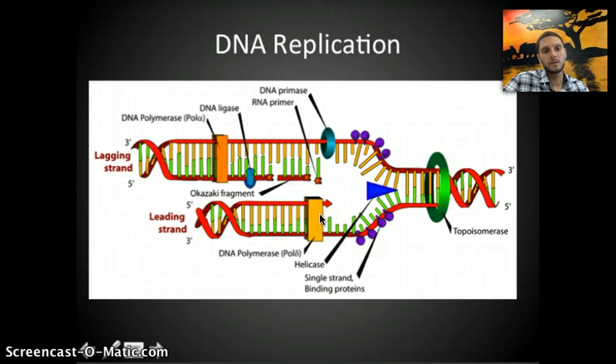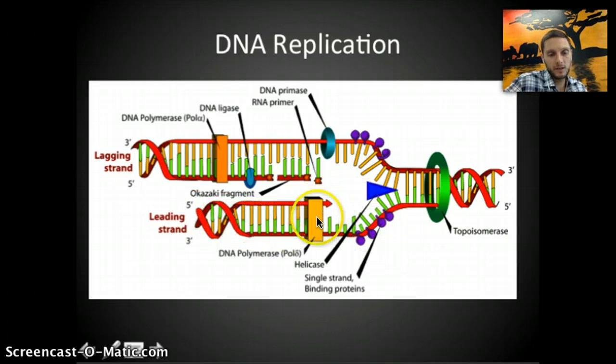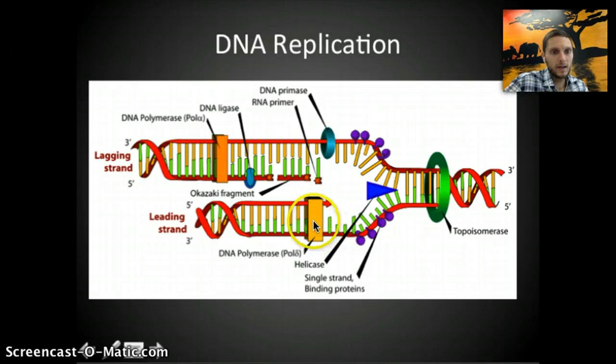This process is straightforward on one of the strands, called the leading strand. DNA polymerase is able to continue along and add new nucleotides to this strand continuously, and they're added at the 3' end.